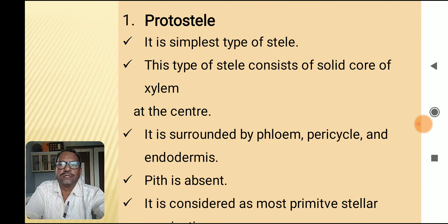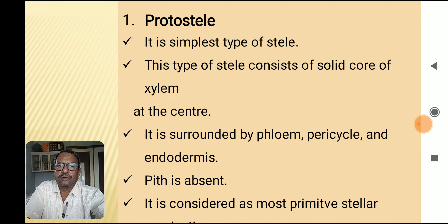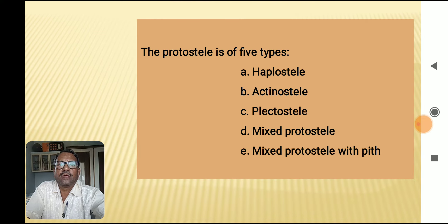The first type is protostele. It is the simplest type of stele, consisting of a solid core of xylem at the center, surrounded by phloem, pericycle, and endodermis. Pith is absent. It is considered the most primitive stelar organization. Protostele is of five types: haplostele, actinostele, plectostele, mixed protostele, and mixed protostele with pith.